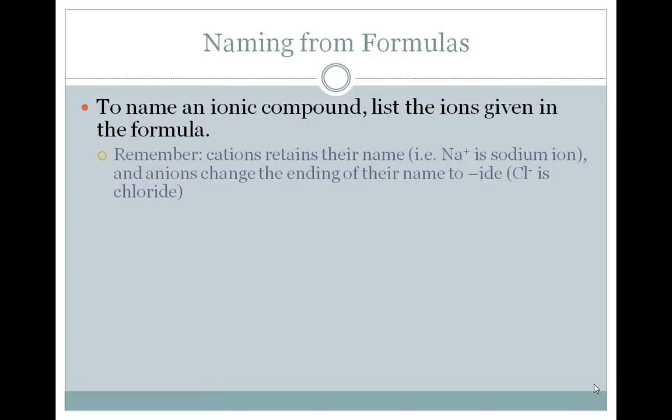We do need to remember that cations retain their name. Cation is our positive ion, so for example, Na+ is sodium ion. And then anions, the negative ions, change the ending of their name to -ide. So Cl-, which would normally be chlorine, is changed to chloride or chloride ion.